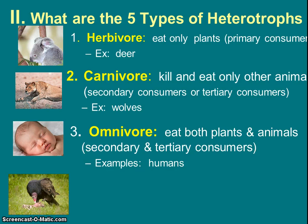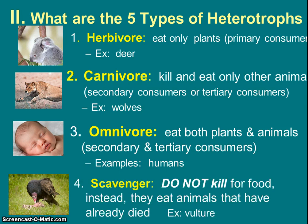Last but not least in this category is scavenger — we'd put vultures here. Scavengers do not kill their food, but they do eat meat, so it's slightly different from carnivore. A lot of students say humans don't go out and kill everything either, but we have the ability to and used to before modern society. Things like raccoons, vultures, and crows would never kill something; they like to find things that are already dead.